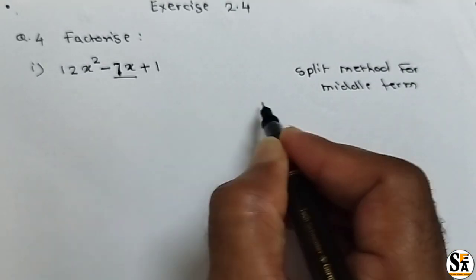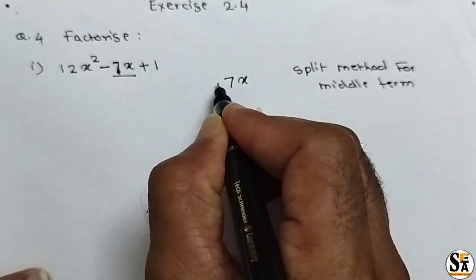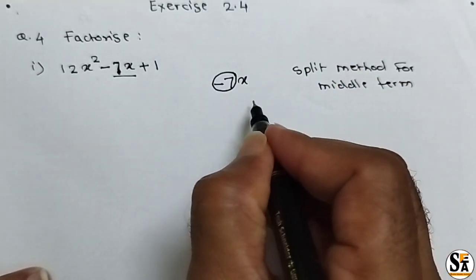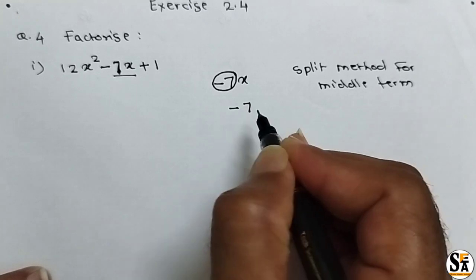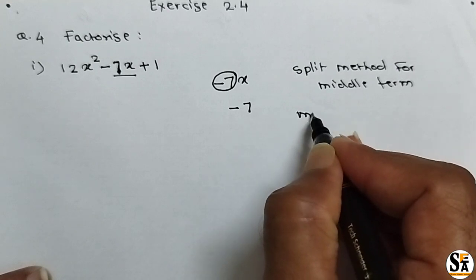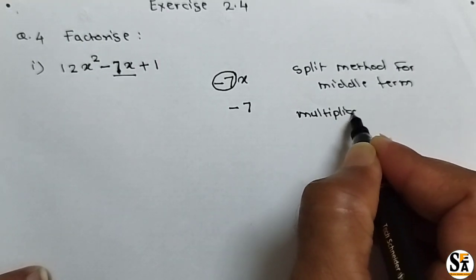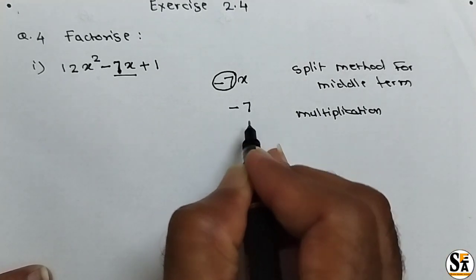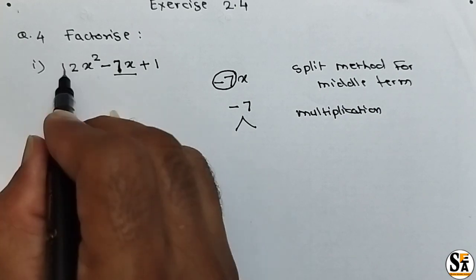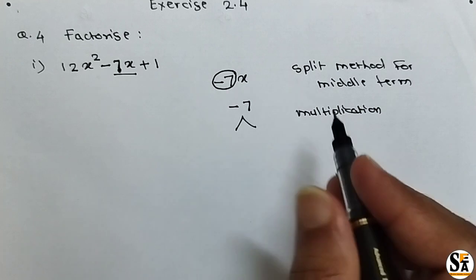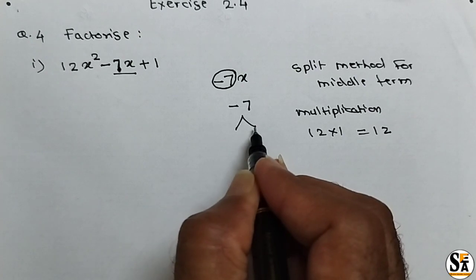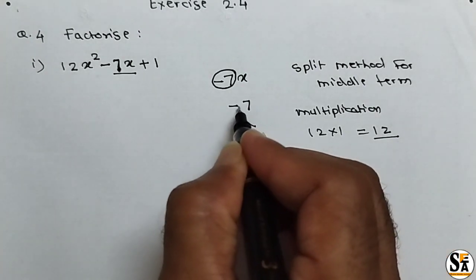We have to split the middle term minus 7x. Consider only the coefficient of the middle term, that is minus 7. We have to split minus 7 in such a way that the addition of the two factors equals minus 7, and the multiplication of the two factors equals the last constant 1 multiplied by the coefficient of the first term 12, which is 12. So multiplication must equal 12 and addition must equal minus 7.